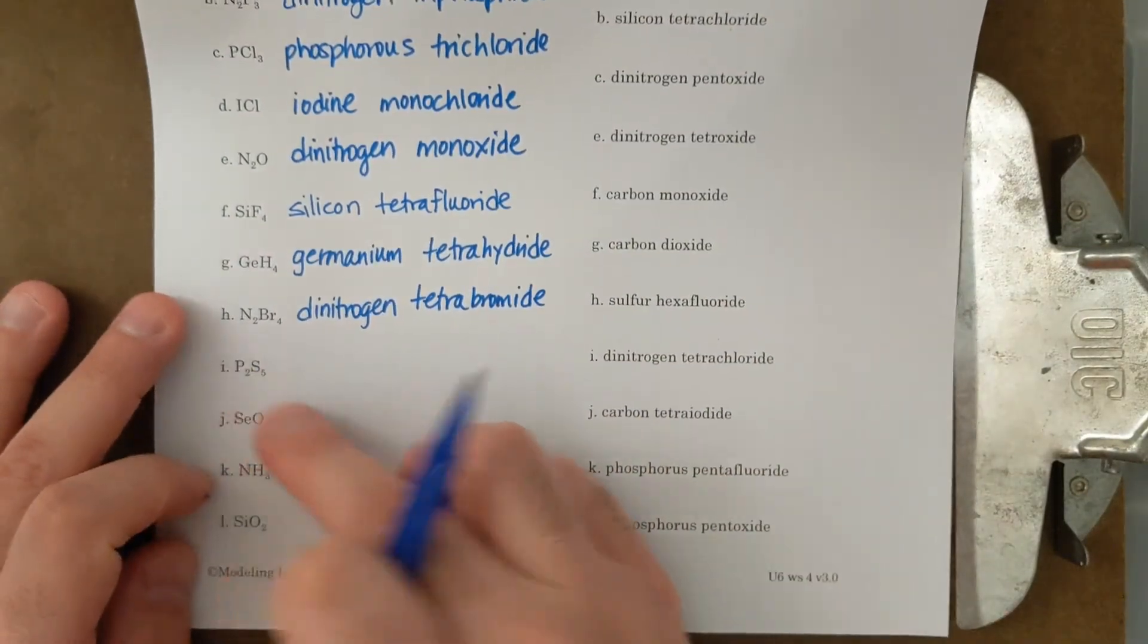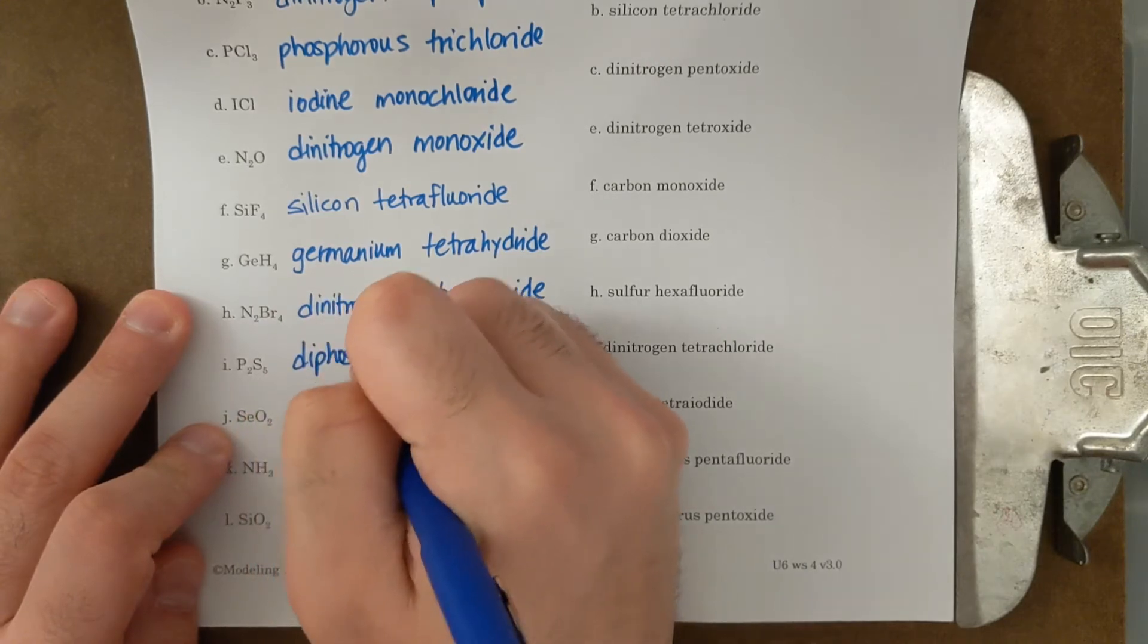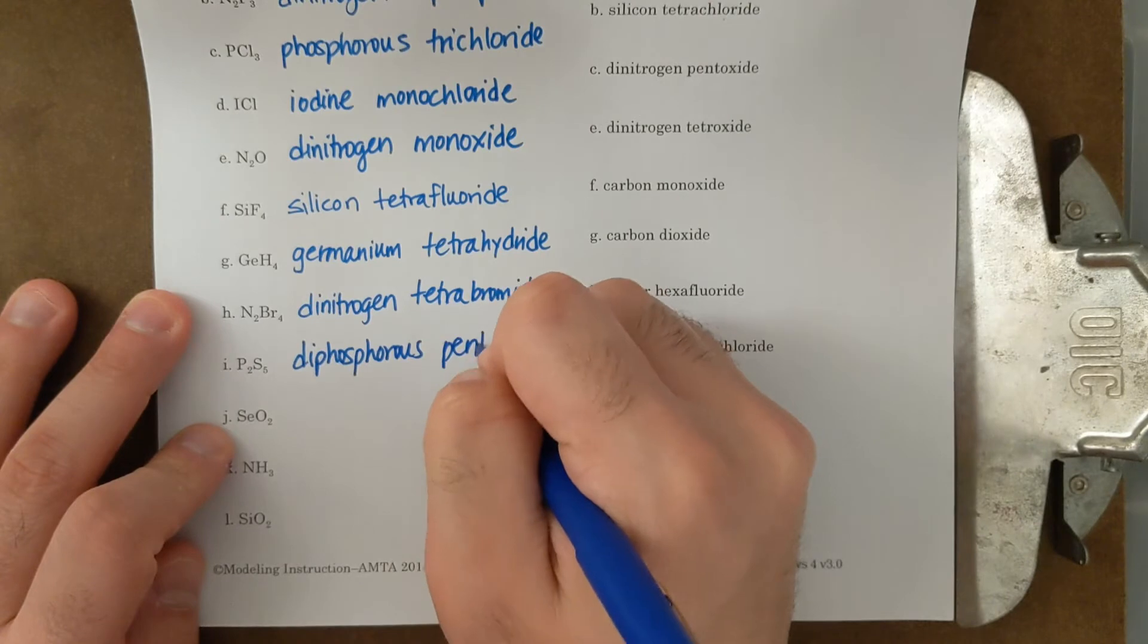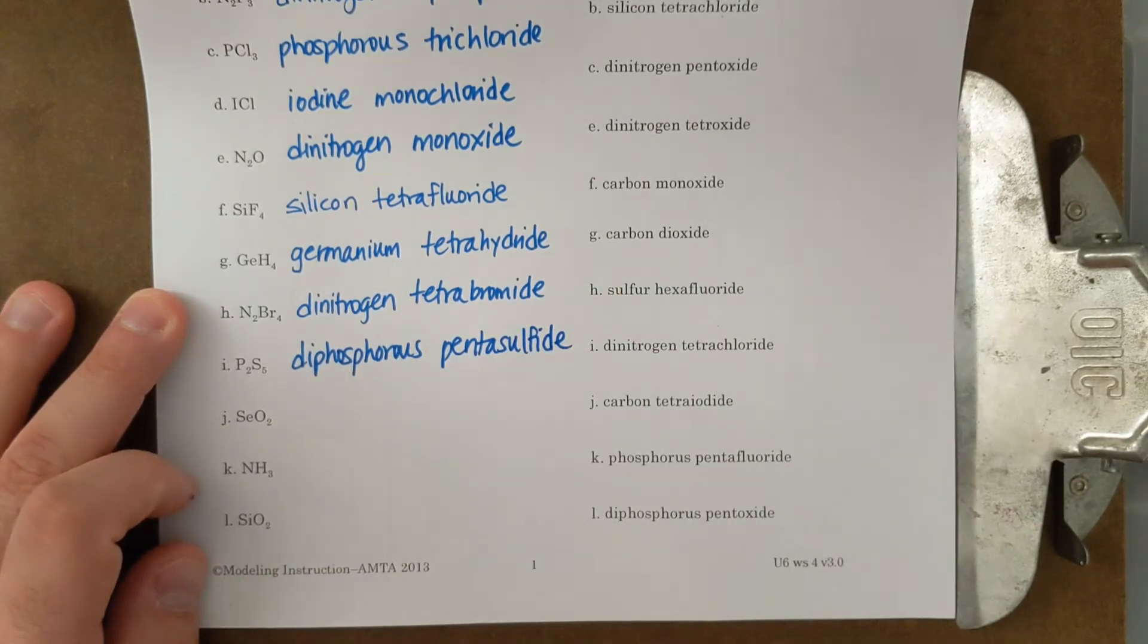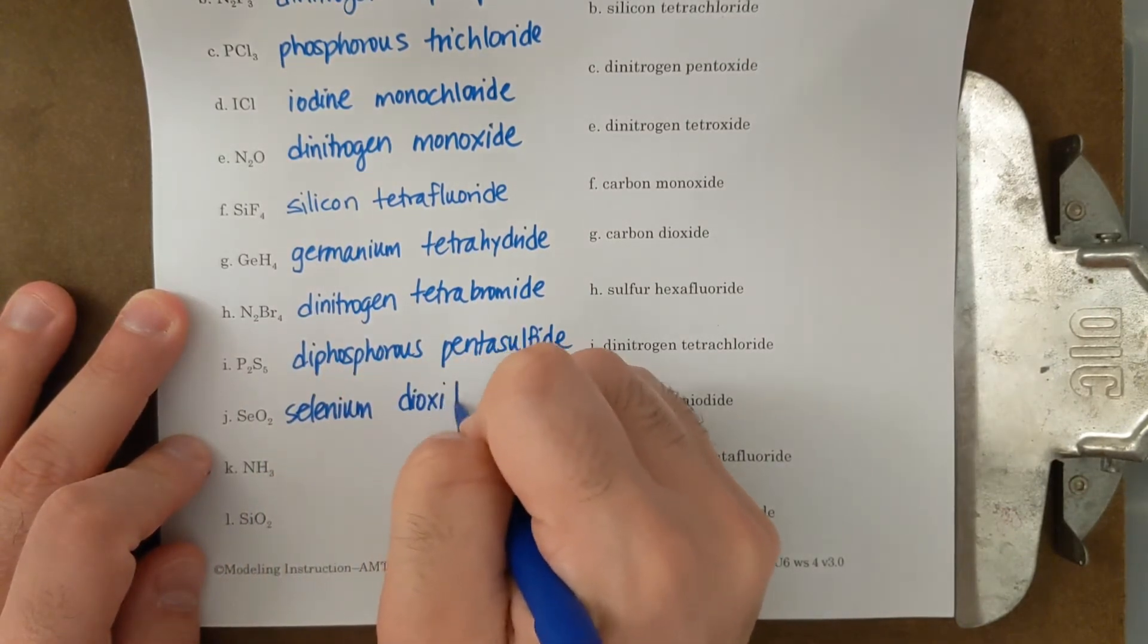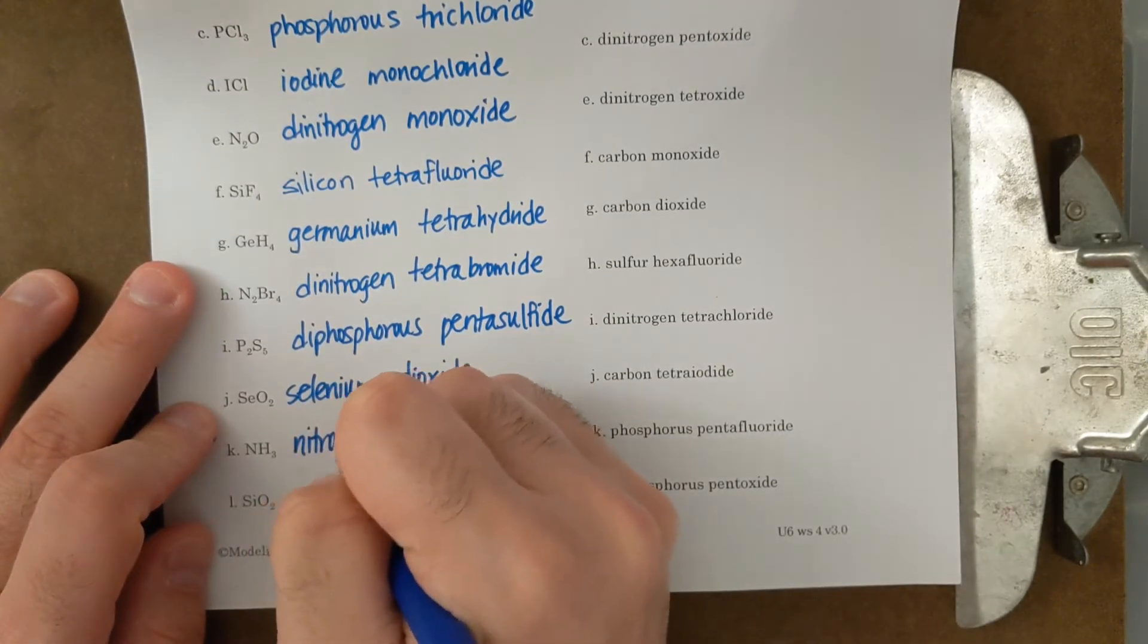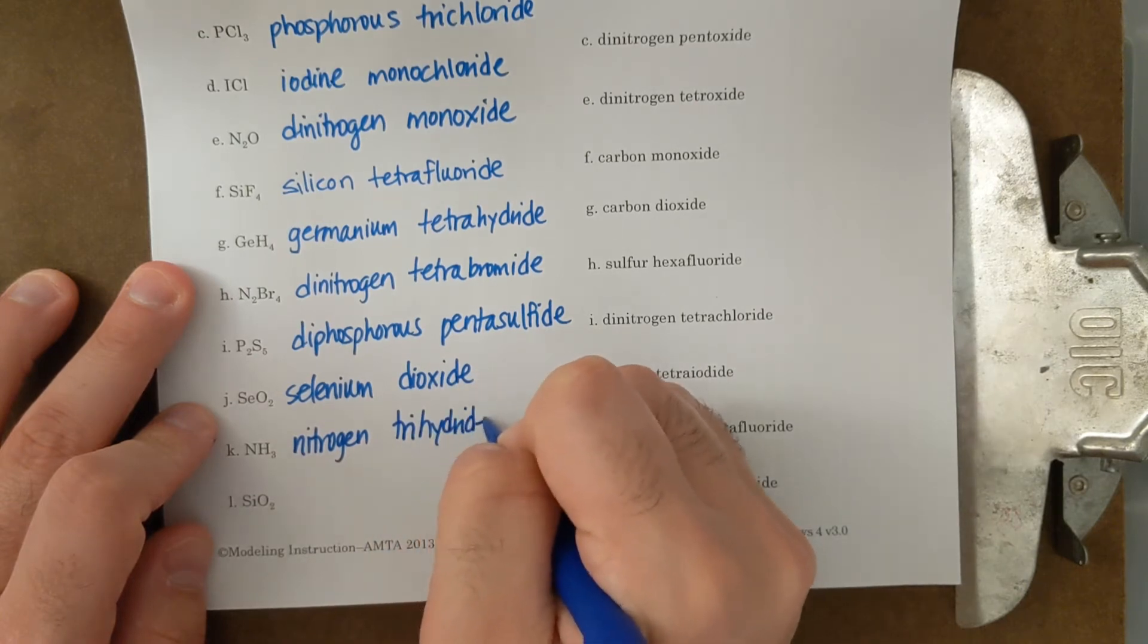All right, moving on. I have P2S5, diphosphorus pentasulfide. Next one, SeO2, selenium dioxide. NH3, nitrogen trihydride, also known as ammonia, but that's the fancier name.